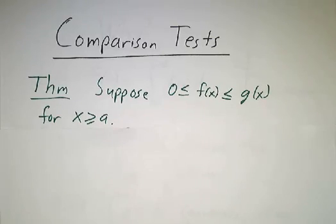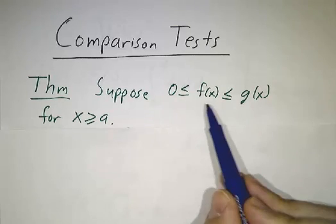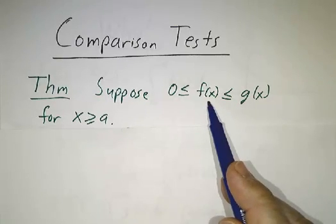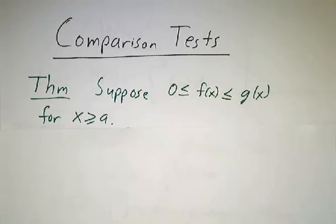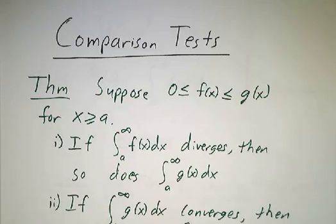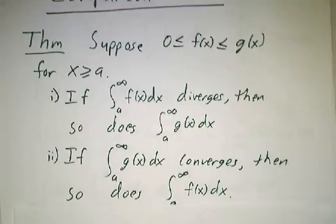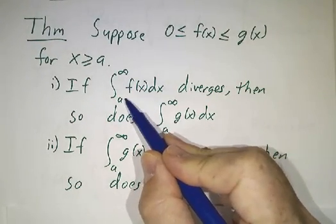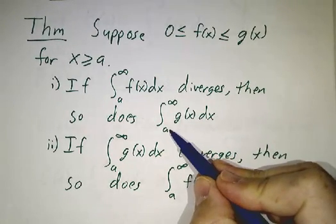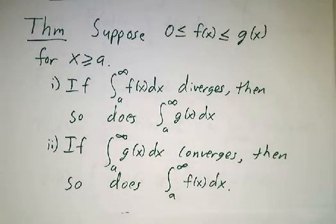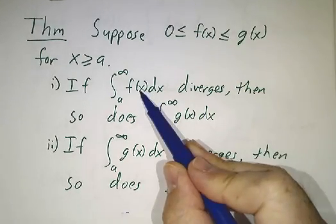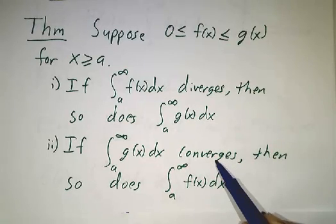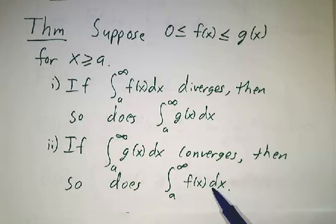Here's the comparison test. Suppose we've got two positive functions, f and g, where g is the big one and f is the little one. We want to compare the improper integral of f from a to infinity and the improper integral of g. The rule is: if the smaller one diverges, then the bigger one also diverges; and if the bigger one converges, then the smaller one converges.